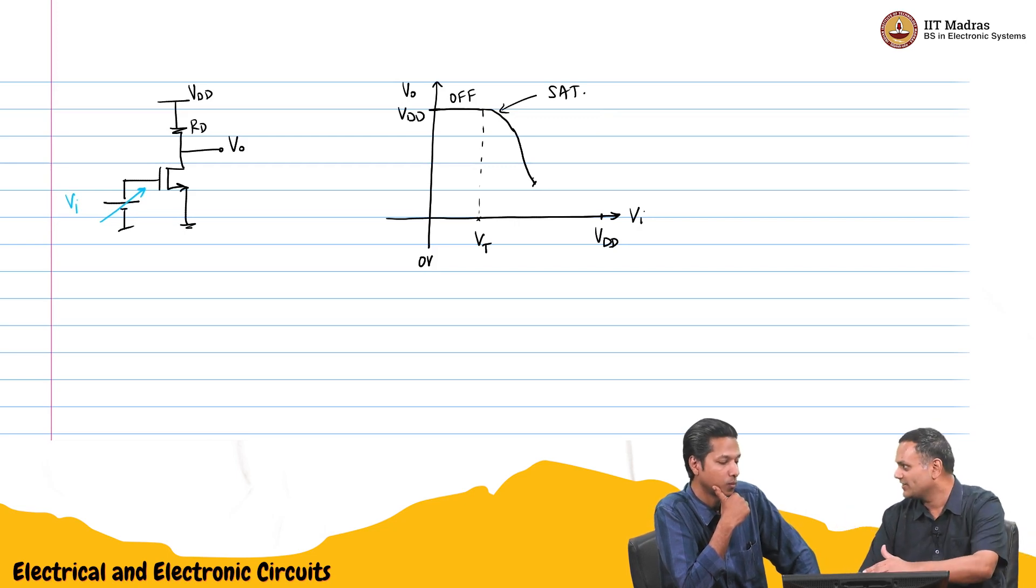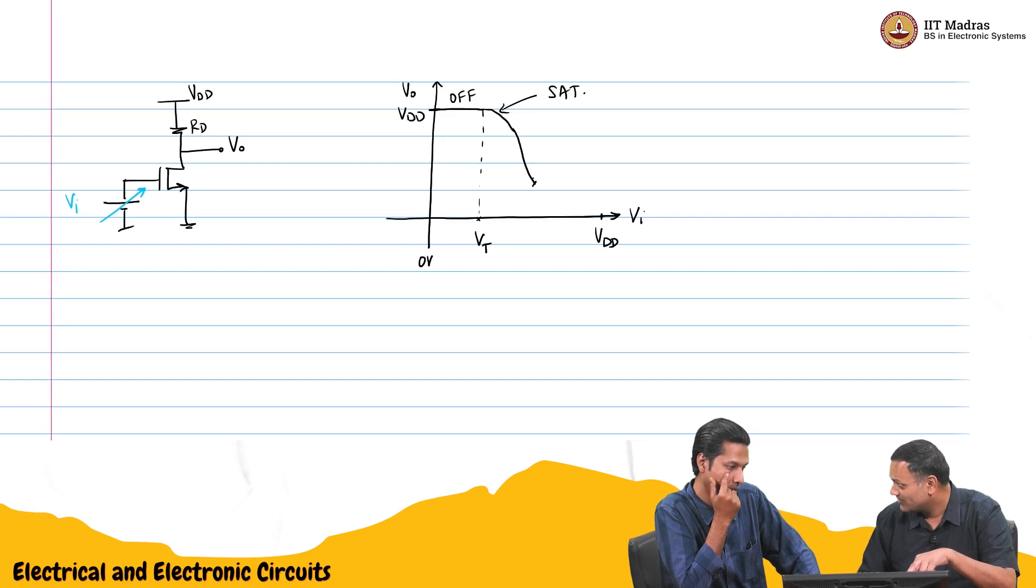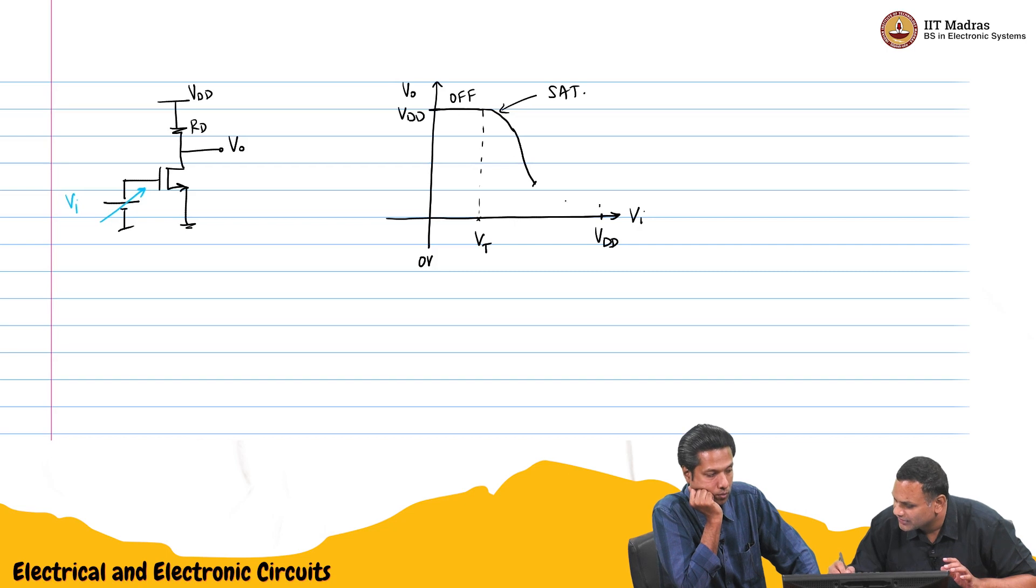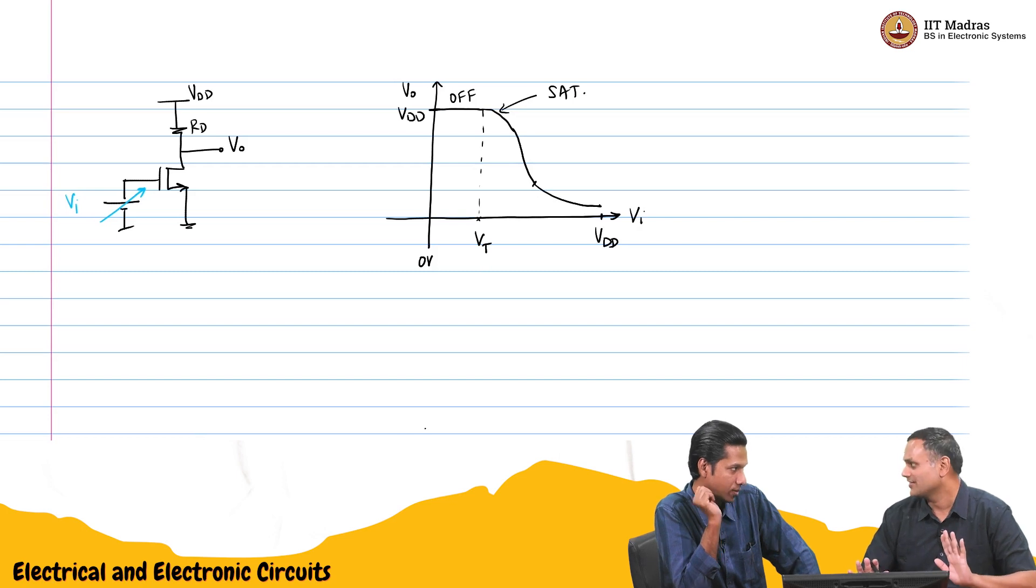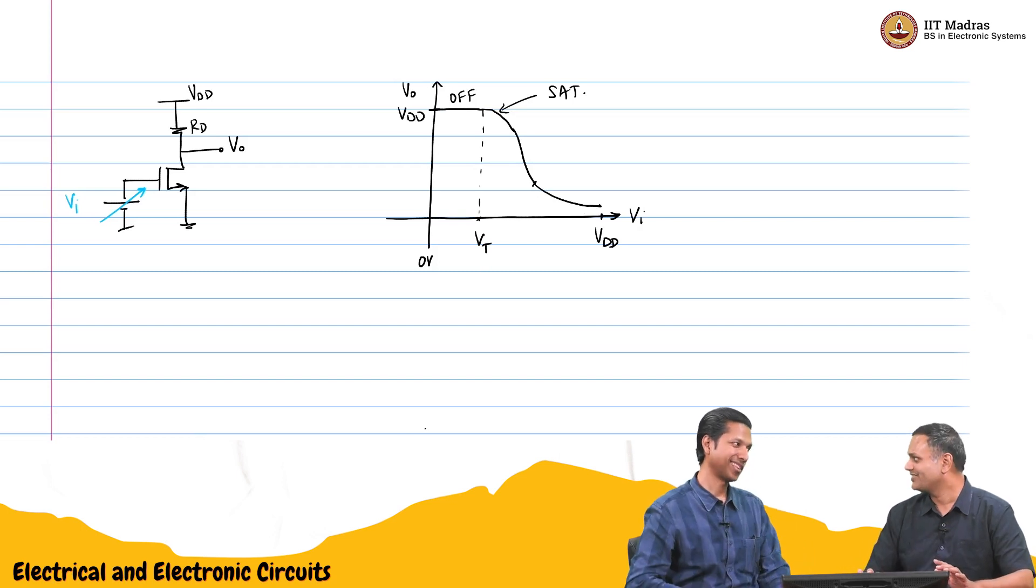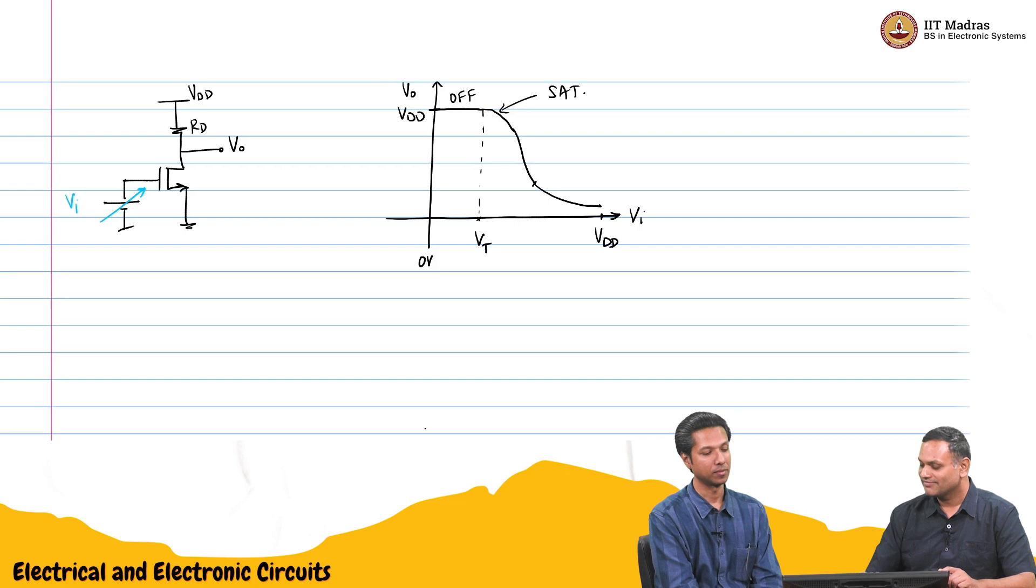And let us see what will happen if I apply Vdd here. I will get a very large current. The output will be very small. It will never go to 0 I think. It will go somewhere here. At that time it will be like a resistor. It will be deep in the linear region. It will look like a resistor. Correct.